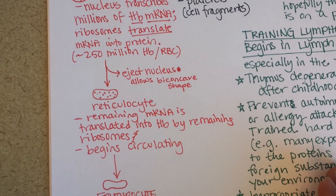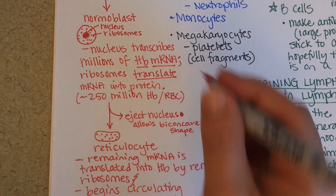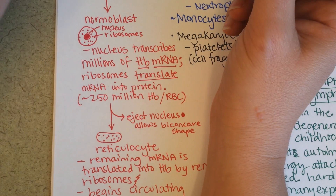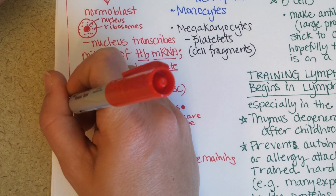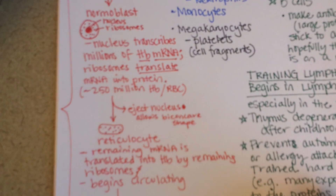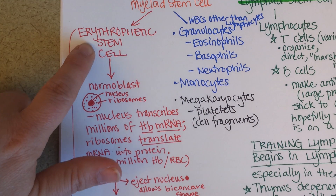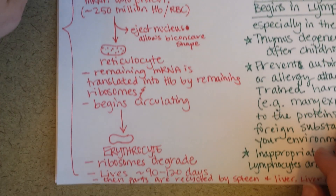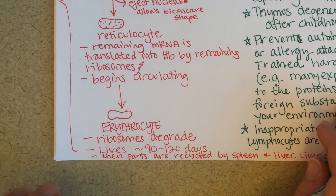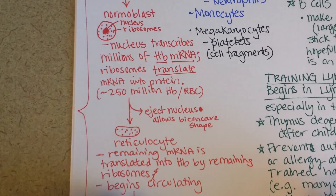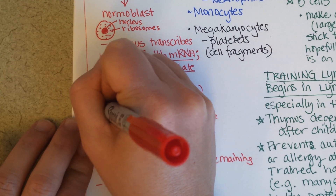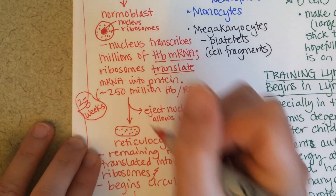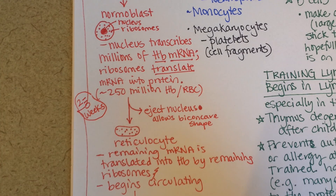This whole process — from the erythropoietic stem cell all the way down to the erythrocyte — takes two to three weeks. So if you have a hemorrhage, have surgery, or give blood, it takes two to three weeks to replenish the red blood cells that were lost.